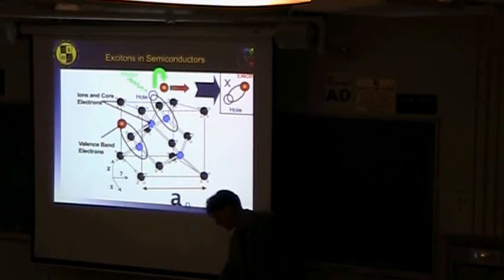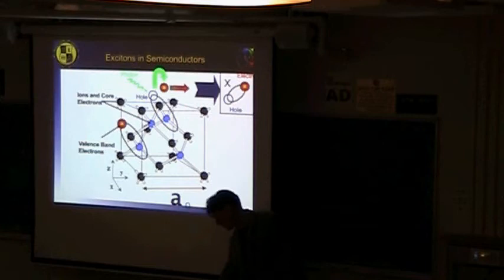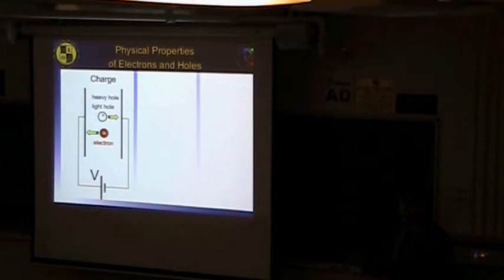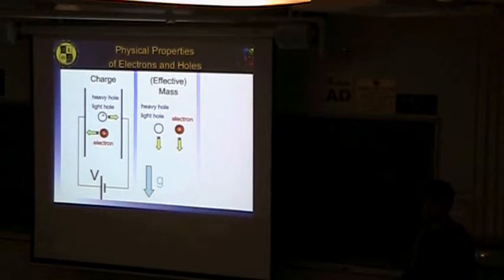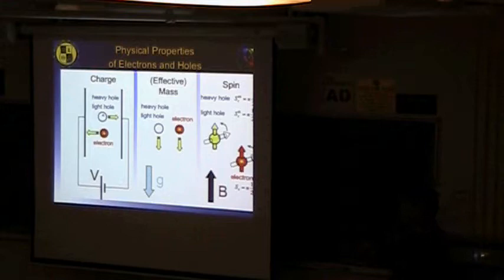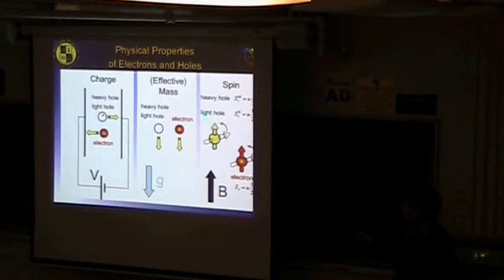So you'll be hearing about excitons, electrons, and holes, and we'll talk about effective mass. The physical properties of electrons and holes: if I put a voltage across the semiconductor, electrons are attracted one way and holes the other. They have different effective masses because they move at different speeds. There's also spin — an electron in there can have spin plus or minus one-half. If I turn on a magnetic field inside the semiconductor, I can align that spin. So we'll be looking at charge, effective mass, and spin.